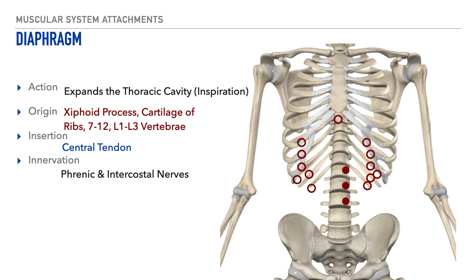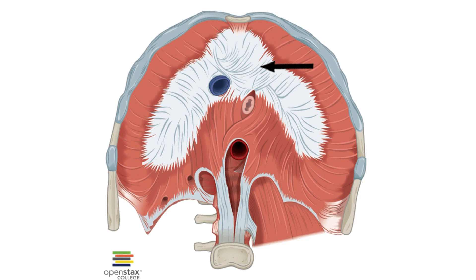The insertion point of the diaphragm is the central tendon, which is an aponeurosis or a broad thin sheath of connective tissue. We'll place a marker here to show its location and expand on it further in just a moment. Here's a better image showing the central tendon, located on the undersurface of the diaphragm. Lastly, the nerve that innervates this muscle is the phrenic and intercostal nerves.